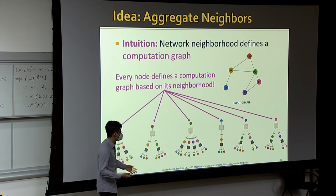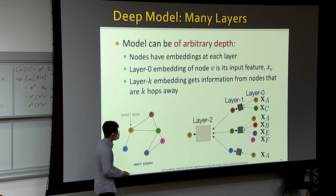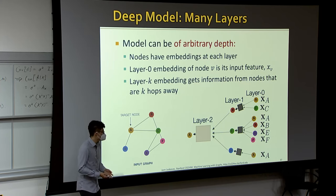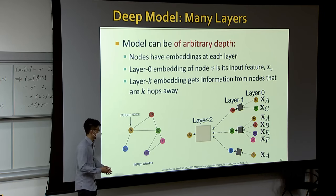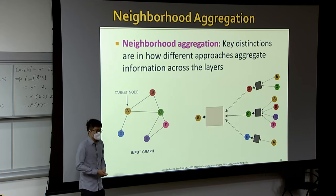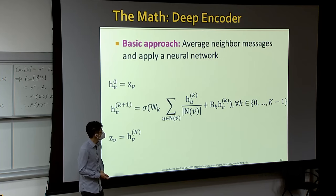Because we use summation in the aggregation, the function is permutation invariant, satisfying the required property. Unlike early GNN work that used recurrent neural networks over sequences of neighbors — which violated permutation invariance — our approach uses shared neural network weights plus a permutation-invariant aggregation to ensure the computation is order-independent.